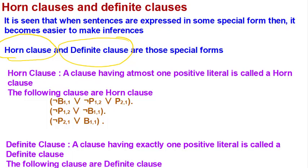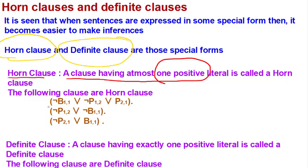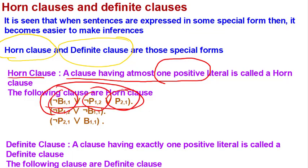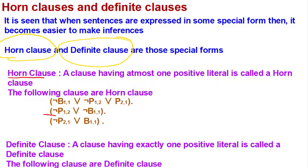In a horn clause, a clause has at most one positive literal — either all literals are in negative (complemented) form, or there is exactly one positive literal. For example, 'negation of B11 or negation of P12 or P21' has two negative and one positive literal, so it is a horn clause. Similarly, 'negation of P12 or negation of P11 or B11' is also a horn clause.